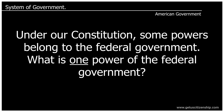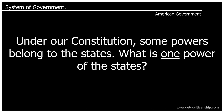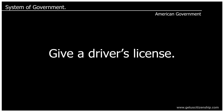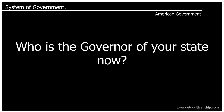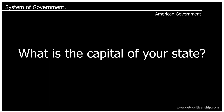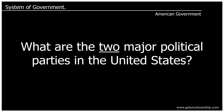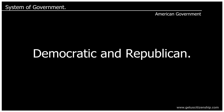Under our Constitution, some powers belong to the federal government. What is one power of the federal government? To print money. Under our Constitution, some powers belong to the states. What is one power of the states? What are the two major political parties in the United States? Democratic and Republican.